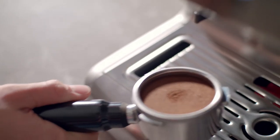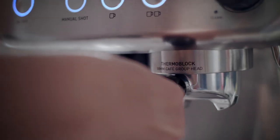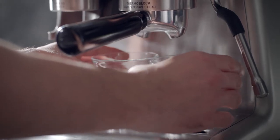Insert the group handle into the group head and turn it to the center until tight. Now it's time to extract the espresso.